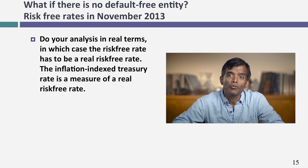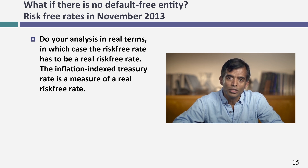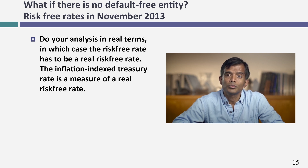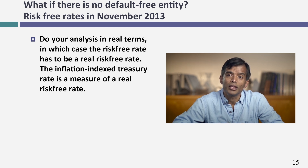That replaces the estimation problem from the discount rate to getting an expected exchange rate — but if you feel that's an easier problem, that's the second choice: switch to a different currency and do your entire analysis in it. The third choice is to avoid currencies altogether by doing everything in real terms. Take inflation out of your cash flows, and your discount rate must be built off a real risk-free rate. One choice for the real risk-free rate is the TIPS rate — the U.S. Treasury inflation-indexed bond — which at the time of this assessment was about 1%.